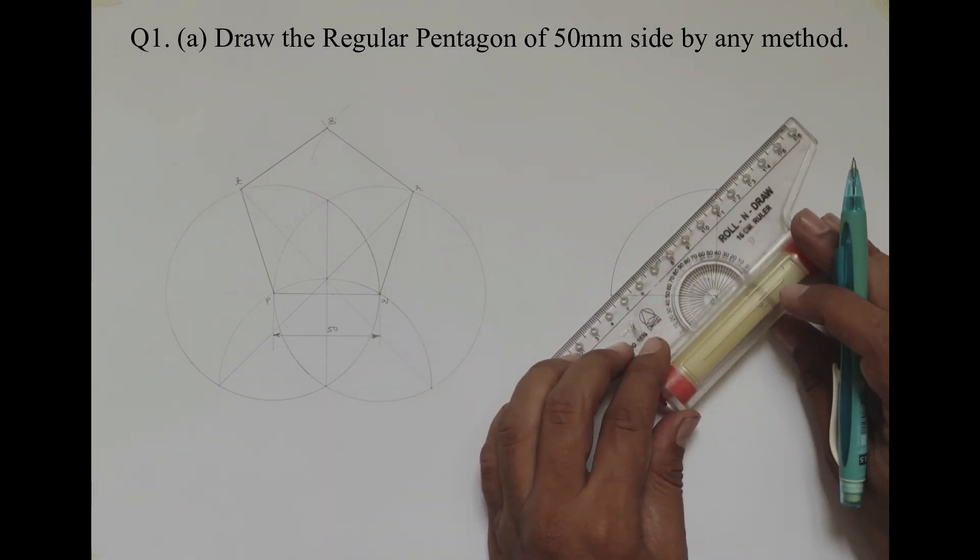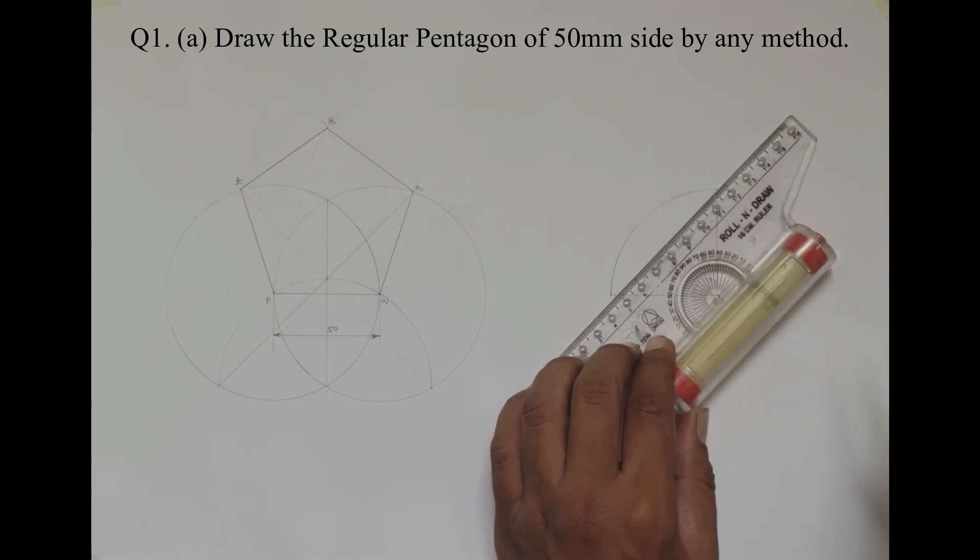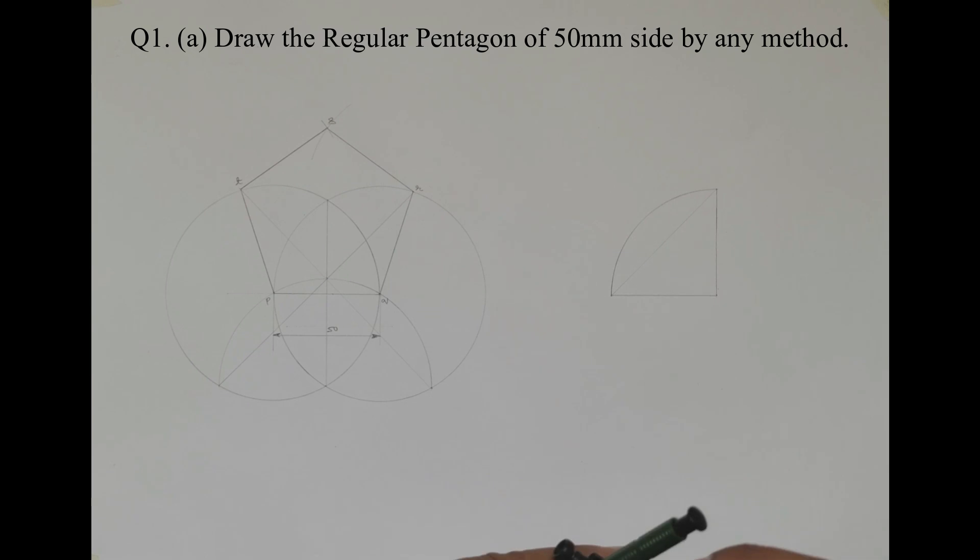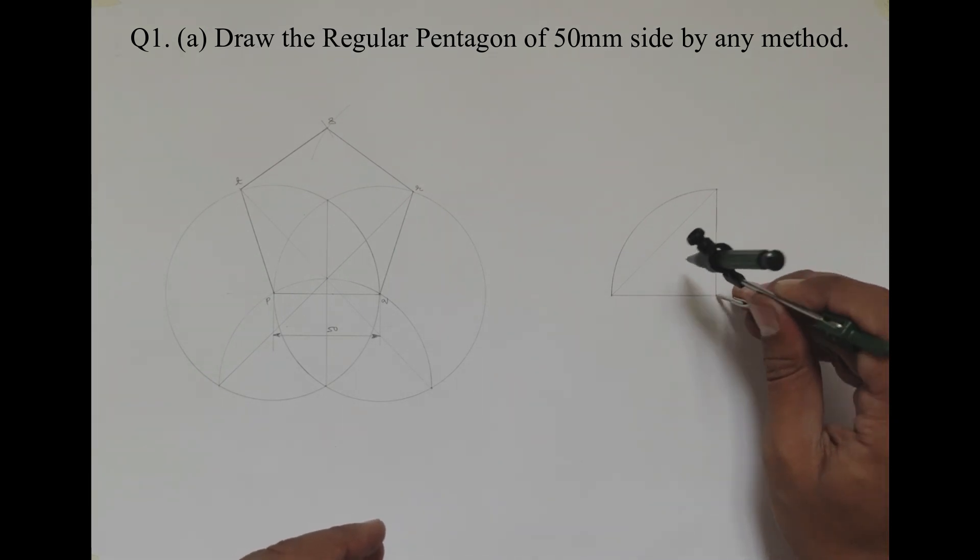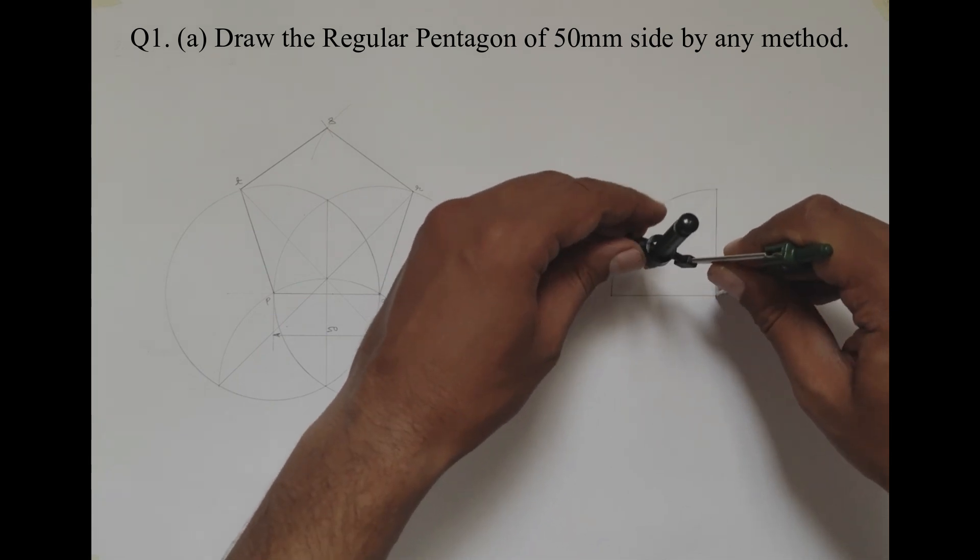Now the same two ends should be joined using a straight line in this manner. Now you have to bisect this horizontal line using more than half distance in your compass.